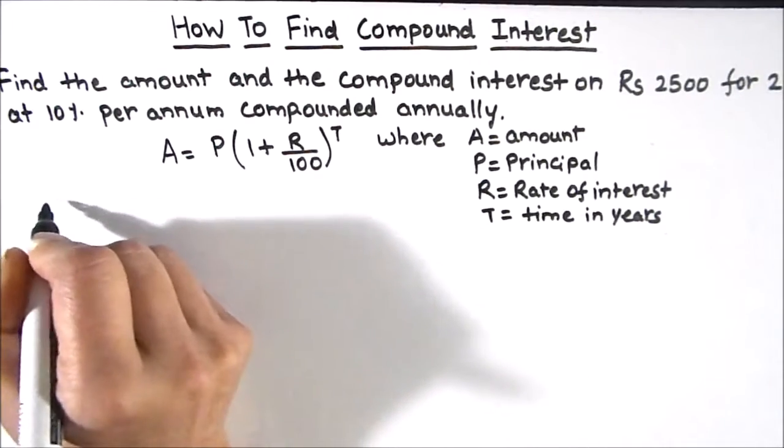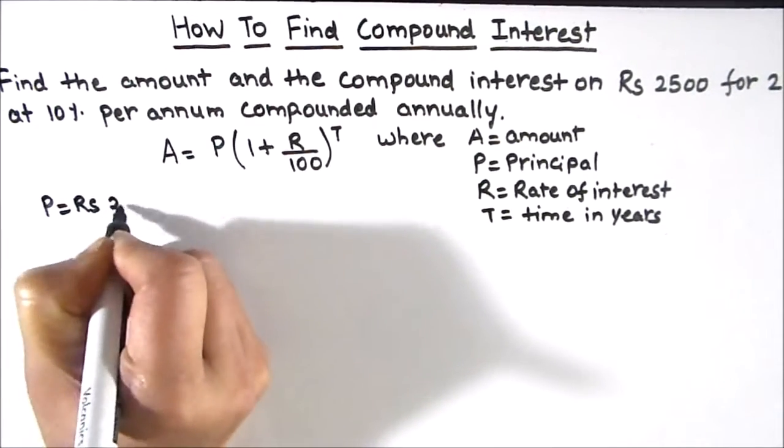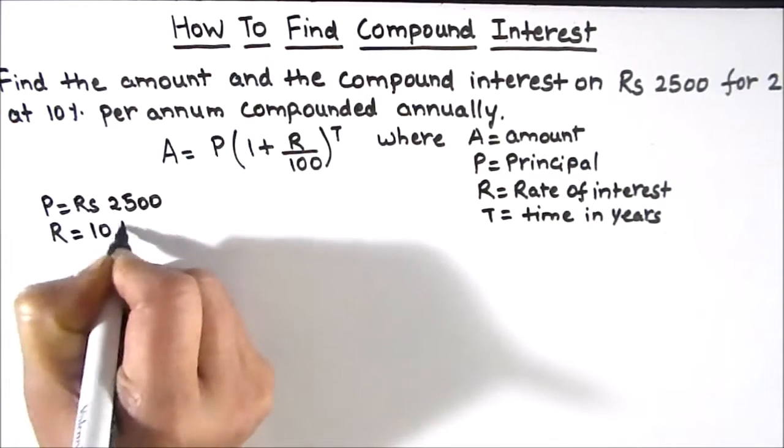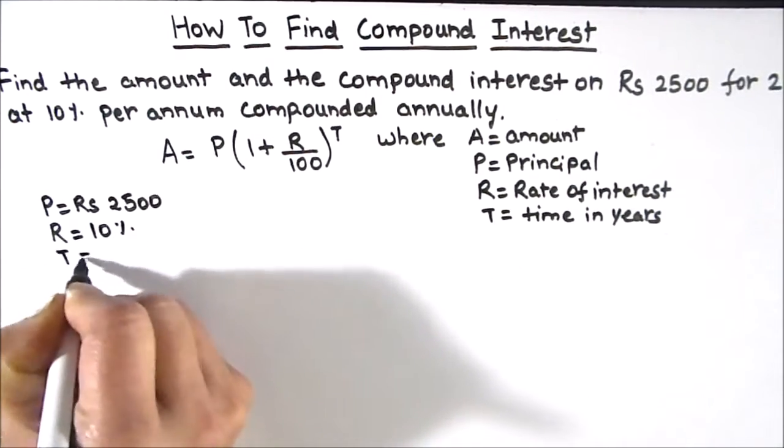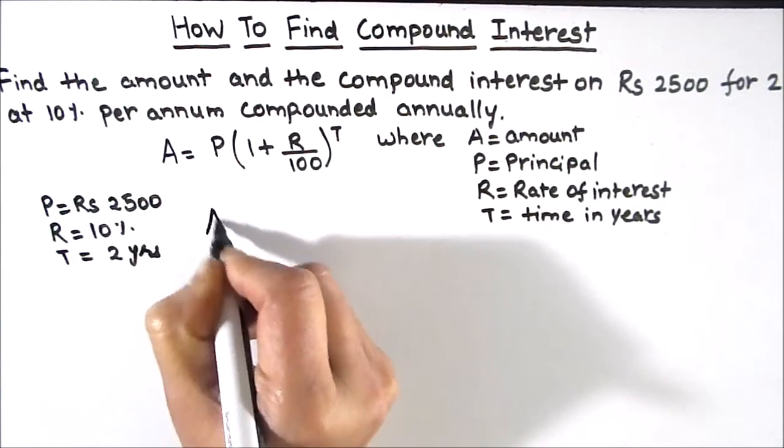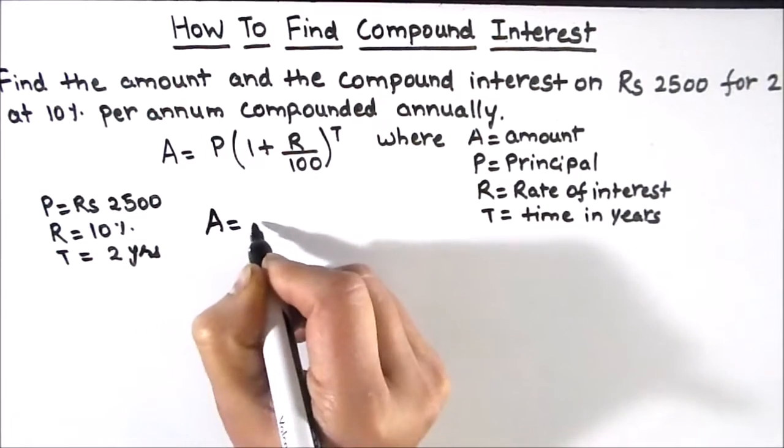In our question we have been given principal amount as rupees 2500, rate of interest is given as 10 percent, and time is two years. So we'll substitute these values in the formula and find amount.